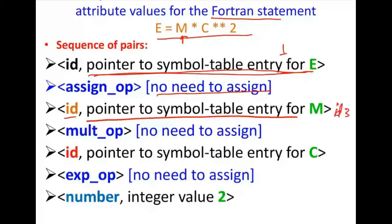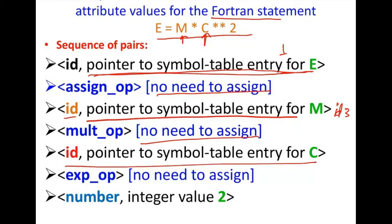Then it is the multiplication or range operator, so no need to assign right now in the symbol table because it is an operator — no new entry is required. Then it is finding another identifier and checks at which place in the symbol table it is stored. Then it is the exponential operator — again no need to assign in the symbol table. Then it is finding a number two, so it enters type as number, and the integer value two is also put in the symbol table.